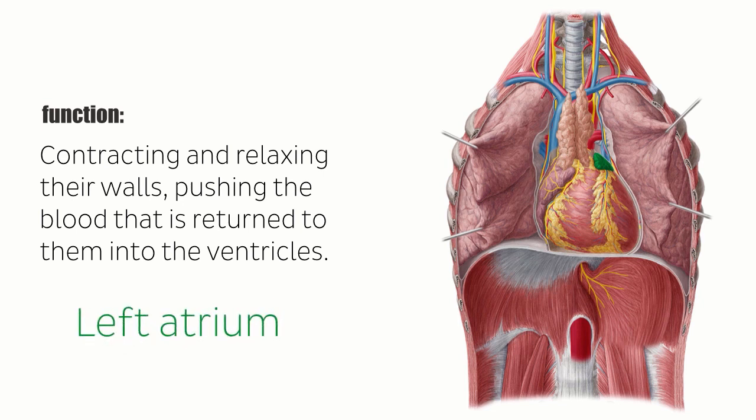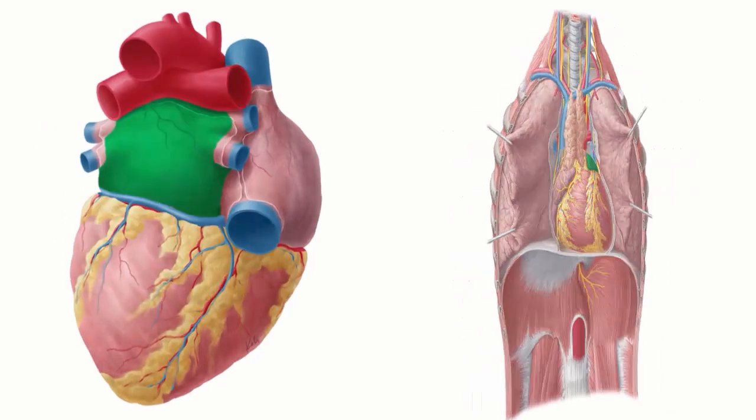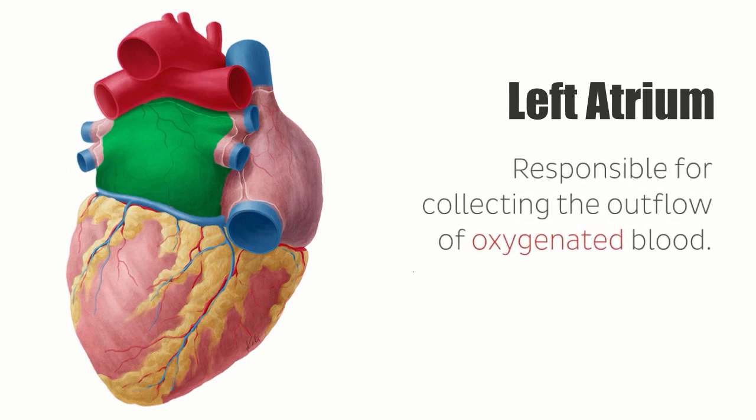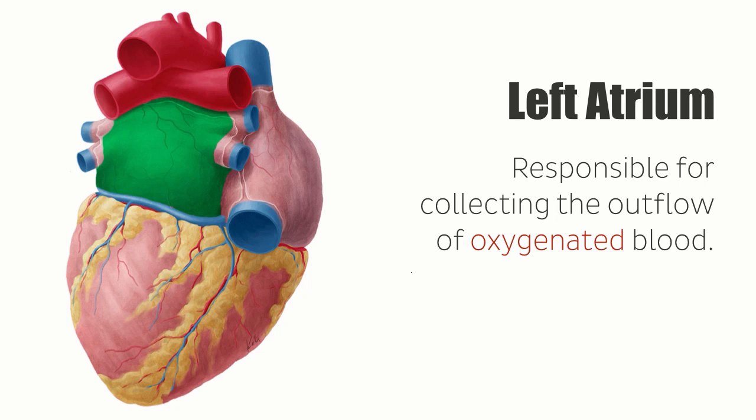In this tutorial, we will focus on the left atrium. The left atrium, as seen here highlighted in green on the diaphragmatic surface of the heart, is responsible for collecting the outflow of oxygenated blood that runs back to the heart from the pulmonary veins.